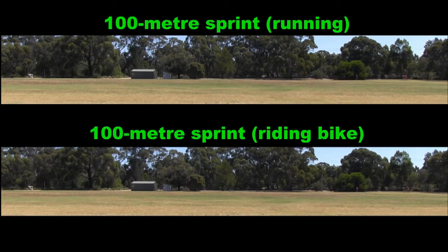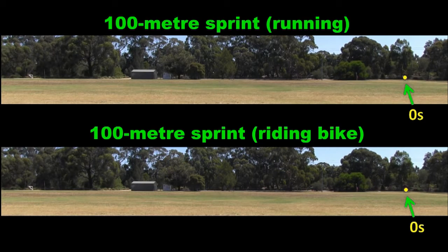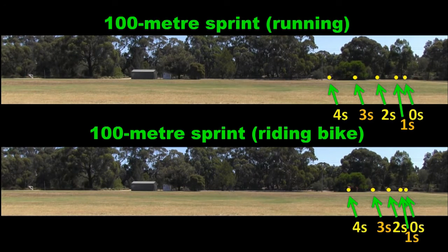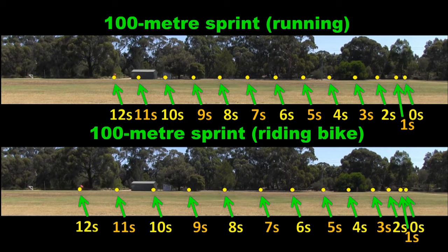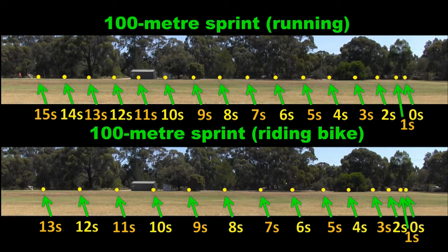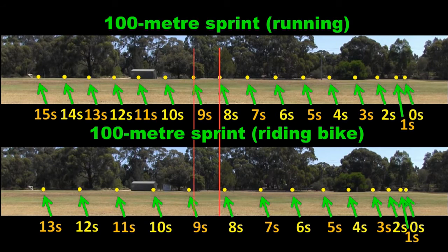I can actually compare my 100 metre running sprint with my 100 metre bike sprint. On the bike, I sped up quite slowly but kept getting faster and faster for a longer amount of time, and my highest riding speed ended up being much greater than my highest running speed. You can see that as a runner I was in the lead for most of the race. Here at the 8 second mark I as a runner was ahead, but after that I as a bike rider caught up and then passed my running self.